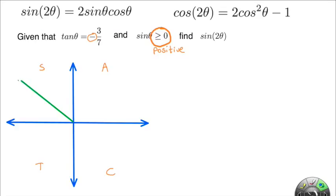This will be our reference triangle. We're going to label the sides. Tangent of the angle is negative 3 over 7, and tangent is opposite over adjacent. So opposite would be 3 (going straight up, so it stays positive), and the adjacent is 7, but it gets negative 7 because it goes to the left.